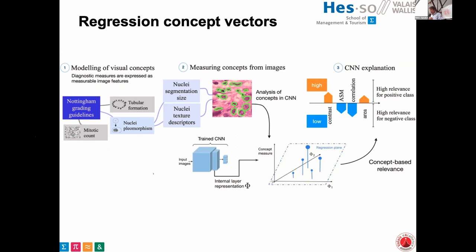One interesting finding here is that nuclei size is important information for histopathology tasks. However, networks pre-trained on ImageNet are trained to be scale invariant, so we actually lose this feature. An experiment Mara conducted was to remove scale invariance from the network, and the performance on histopathology image classification tasks actually really improved. So we can use these types of features to identify problems in the model and develop much better models.